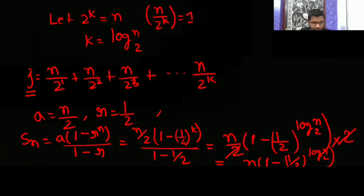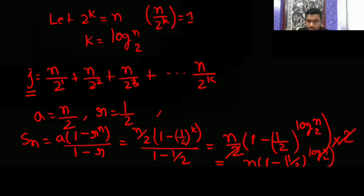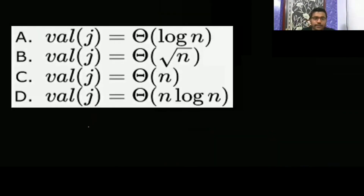So those who are studying in college or want to learn algorithms or gate experiments, share the video so they can also learn. The answer is Θ(n) — val(j) is Θ(n). So Θ(n) is the correct answer.